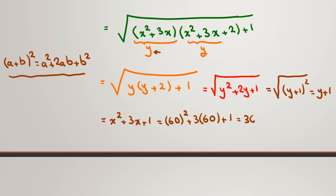6 times 6, 36, 0, 0. Plus 3 times 6, 180. Plus 1. So if we add up these three numbers: 1 plus 0 plus 0, 1. 8 plus 0, 8. 1 plus 6, 7. And 3. So the answer is 3781.